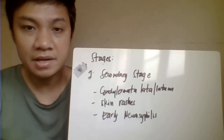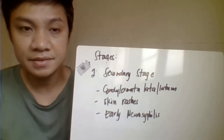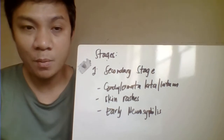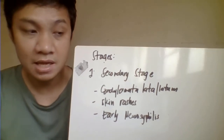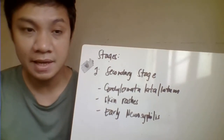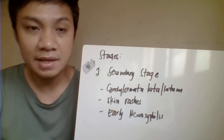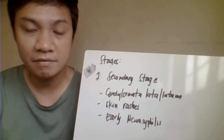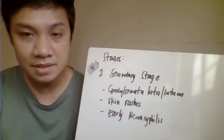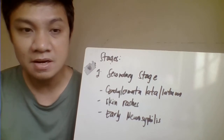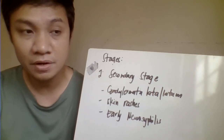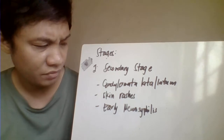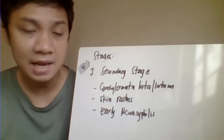The secondary stage occurs when the patient is left untreated. It is characterized by dissemination of the bacteria to other parts of the body. The secondary stage is characterized by the appearance of condylomata lata, which are wart-like lesions.